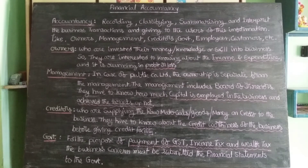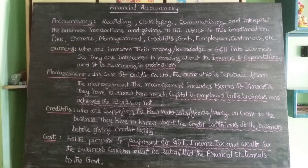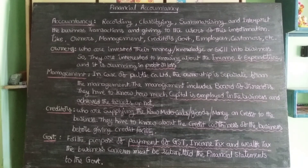We first record the business transactions into the books. That means recording. Next, classifying — classifying means dividing by the nature of the transaction; we need to separate them. And summarizing and interpreting the business transactions means presenting the information in a simple and easily understandable manner to the users of this information.